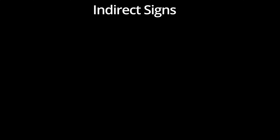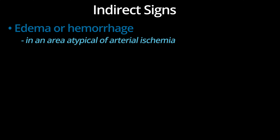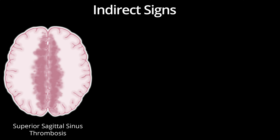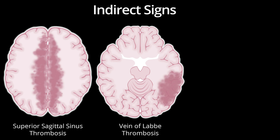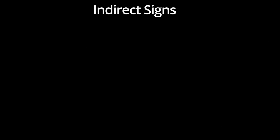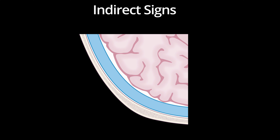Indirect signs can also help you make the diagnosis of cerebral venous thrombosis. Indirect signs include edema or hemorrhage in an area which is atypical for arterial ischemia. In addition, there are some areas which are pretty classic for edema secondary to CVT. While not specific, edema or hemorrhage in these regions should make you at least consider CVT and look closely at the nearby sinuses. These regions include the high parasagittal gray and white matter, the mid- and posterior temporal lobes, and the basal ganglia and thalami.